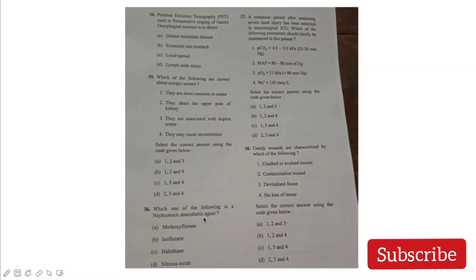Which of the following agent is a nephrotoxic anesthetic agent? Answer is methoxyflurane. The fluorine compound in methoxyflurane causes severe nephrotoxicity. This is a very bad agent for the kidneys. A comatose patient sustaining head injury is in neurosurgical ICU. The following parameters should ideally be maintained: PaCO2 33 to 38 - yes. Mean arterial pressure 89 - yes. PaO2 more than 11 - yes. Sodium less than 130 - no. Usually we don't cause sodium to be very low. Less than 140 is preferred.